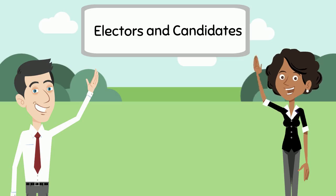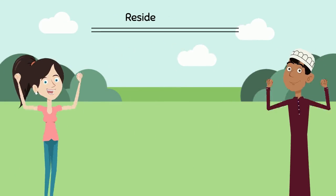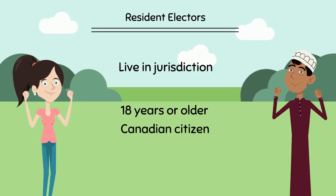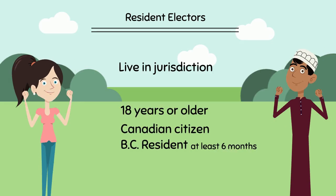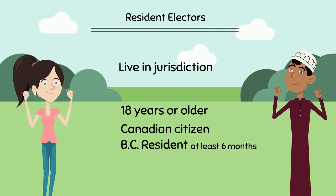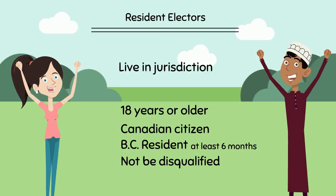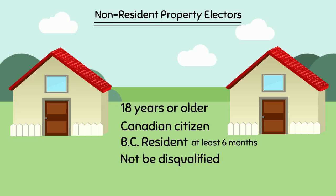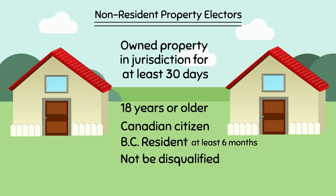In BC local elections there are two kinds of electors. Resident electors live in the jurisdiction and must be at least 18 years of age on general voting day, be Canadian citizens, have resided in BC for at least six months before registering to vote, and not be disqualified from voting. Non-resident property electors must meet the same qualifications as resident electors, except instead of living in the jurisdiction they must have owned property in the jurisdiction where they are intending to vote for at least 30 days before registering to vote.